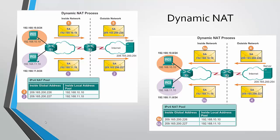Here is the process of dynamic NAT, focusing on the orange path. PC1 sends a packet with a private address. R2 translates it using the first available inside global address. The packet is sent to the web server with a public address. The server answers with a public address which comes through R2, which translates it to a private one so PC1 can receive the packet with its own private network address.